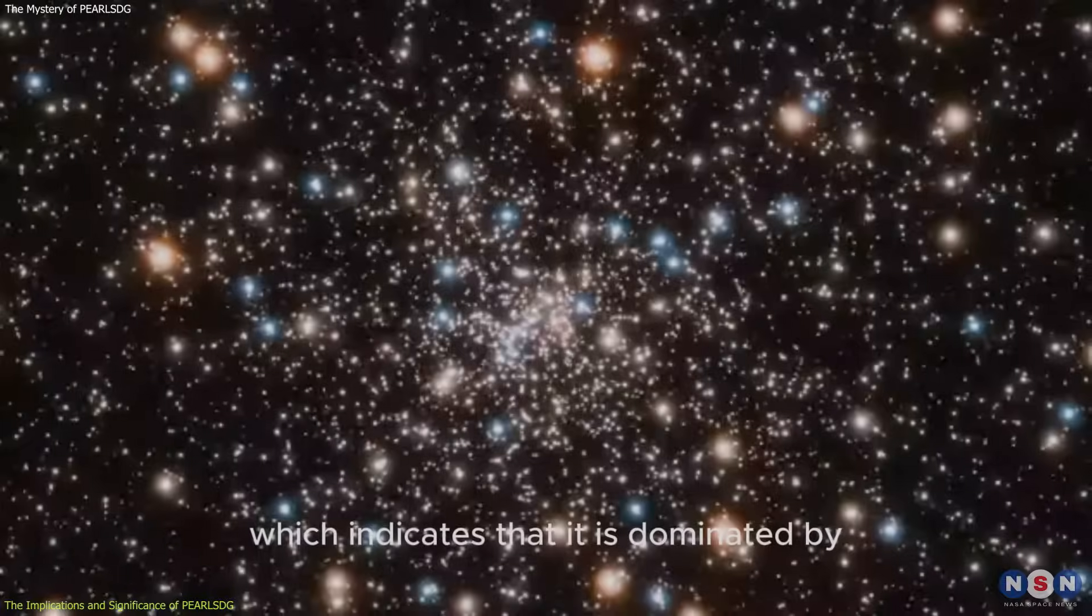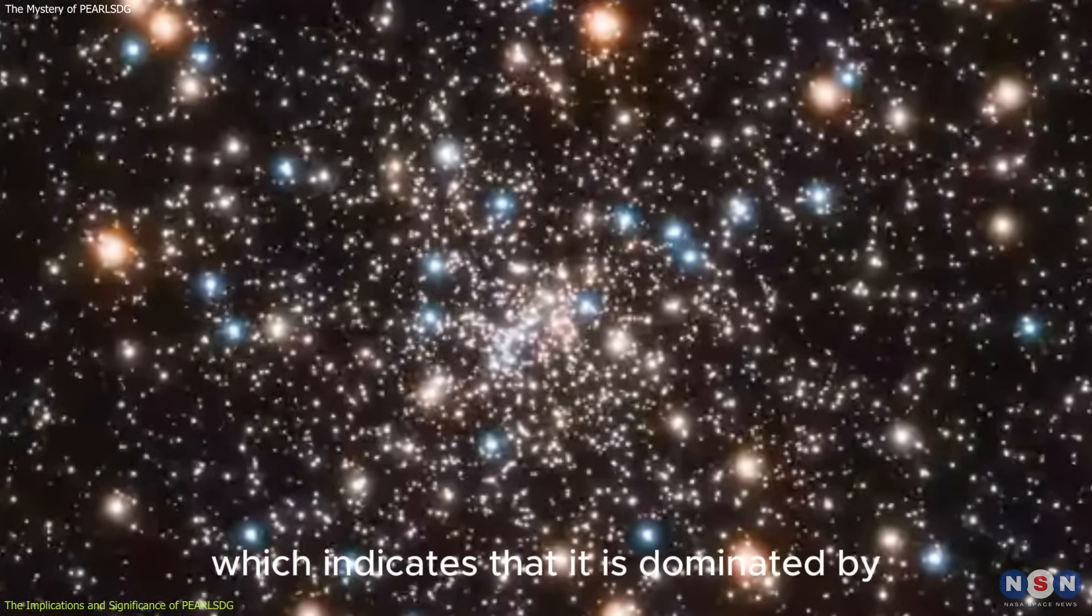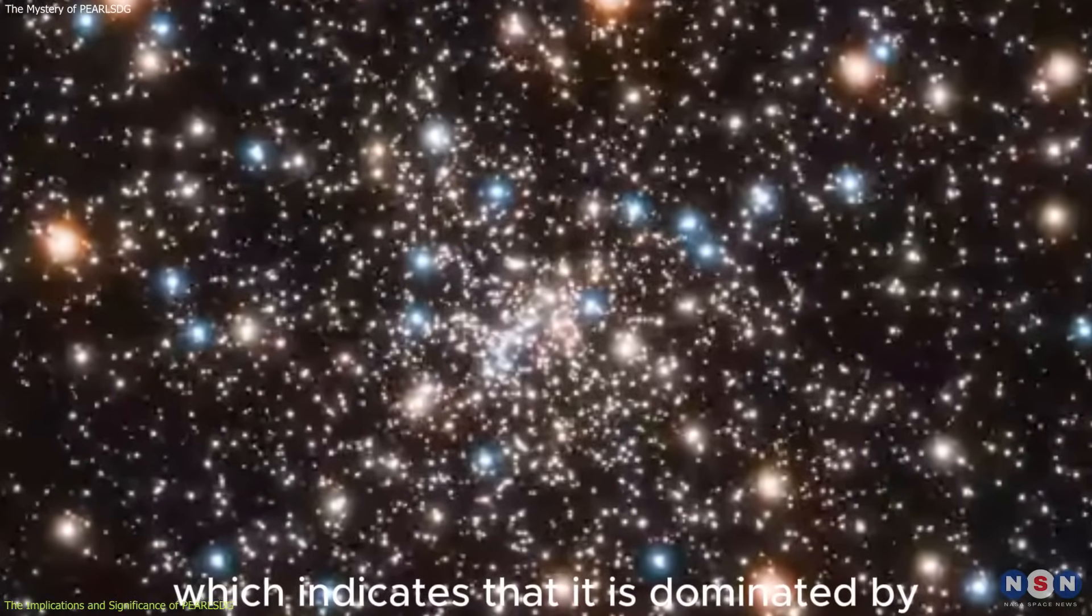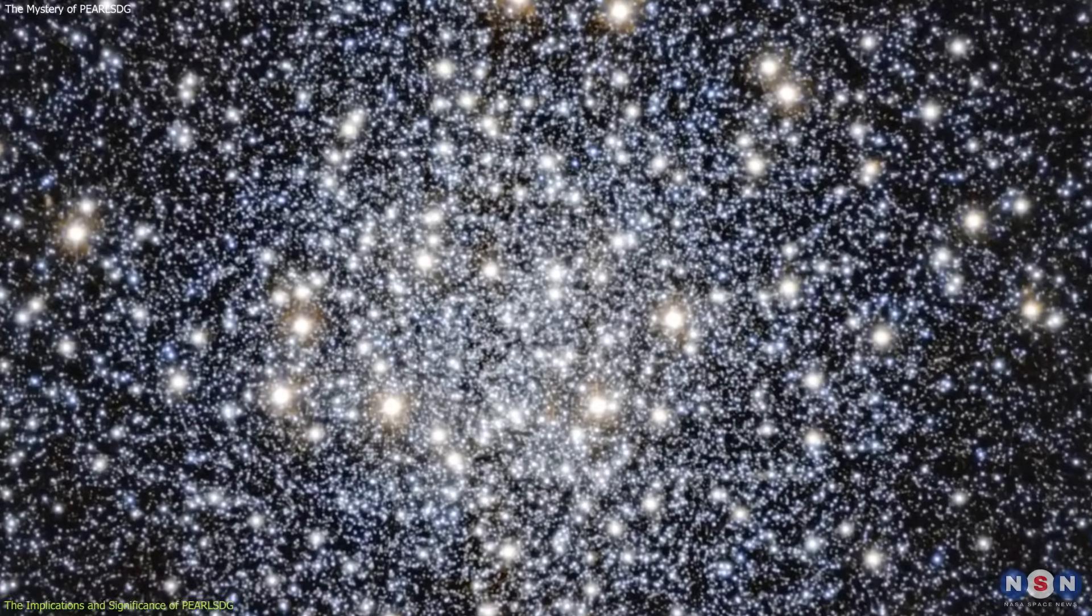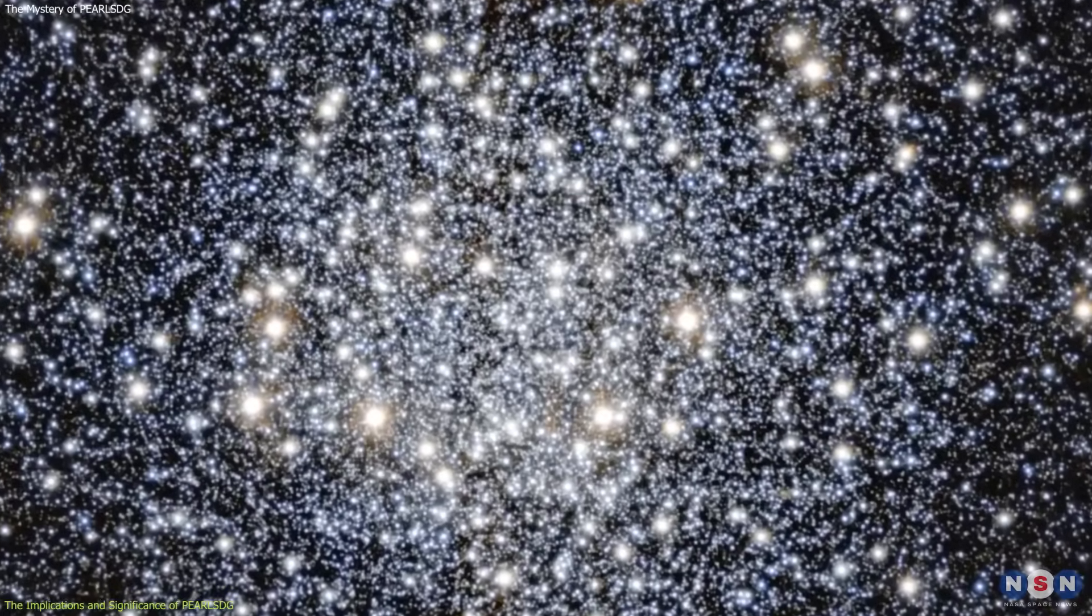It has a reddish hue, which indicates that it is dominated by old and low-mass stars that have a longer lifespan and a cooler temperature than young and high-mass stars, which are bluer and brighter.